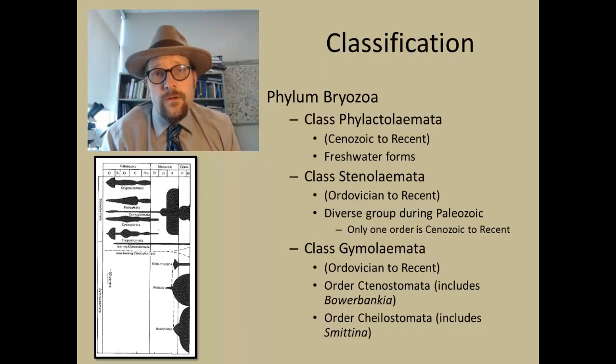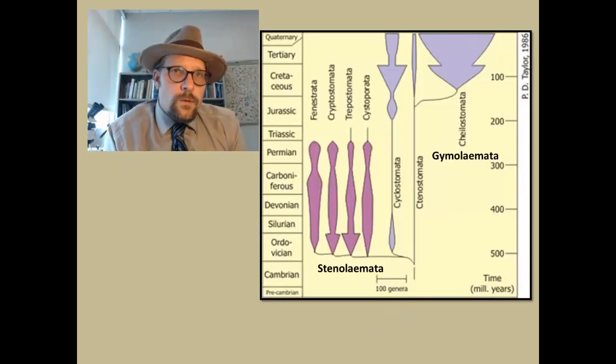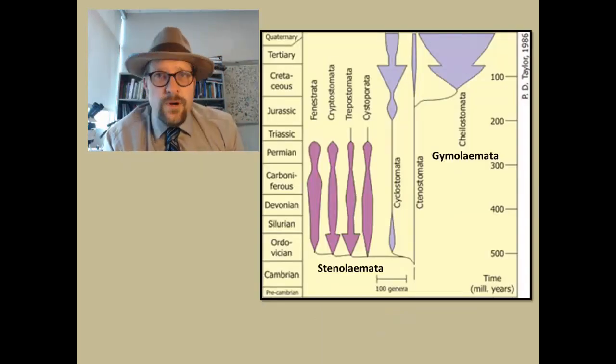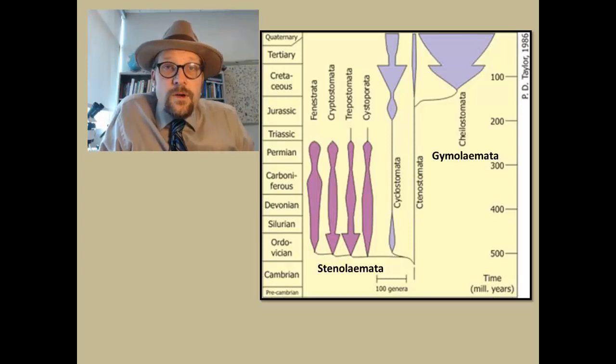Let's now look at the classification of various groups of bryozoans. There are three classes: the Phylactolaemata, which are the freshwater forms, and they have a fossil record that extends back to the Cenozoic. The Stenolaemata have a diverse fossil record and were the most numerous during the Paleozoic, with a fossil record extending back to the Ordovician. The final class is the Gymnolaemata, with a fossil record extending back to the Ordovician, and includes both the Bowerbankia and Smittina that I have shown earlier. Note that bryozoans do not appear until the Ordovician, despite their primitive nature. The cnidarians predate bryozoans, but during the Ordovician and into the Permian, bryozoans remain very common in the fossil record.